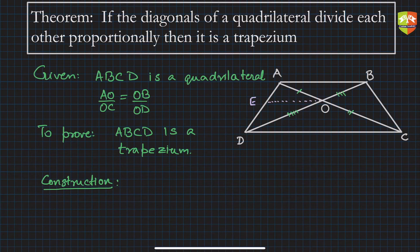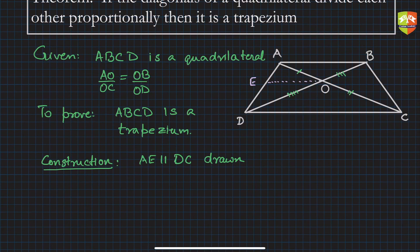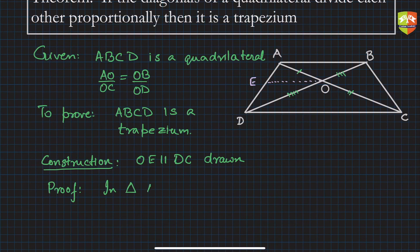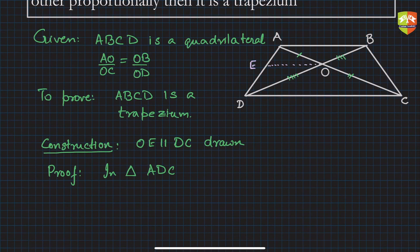So let's draw a line to point E, such that OE is parallel to DC — that is our construction: OE parallel to DC drawn. Now in triangle ADC, OE is parallel to DC by construction. Therefore, applying BPT in triangle ADC.